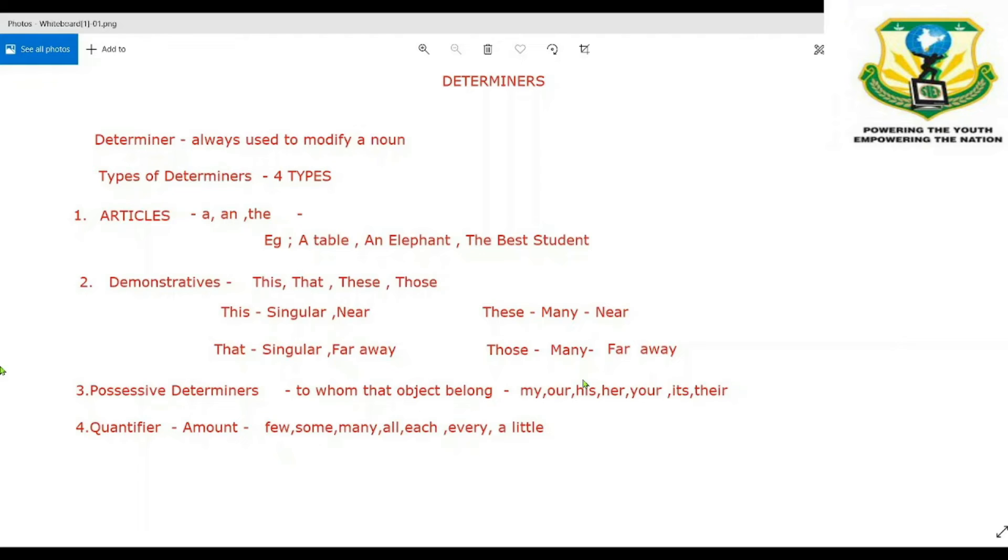All these come in as possessive determiners. And the fourth type is quantifier, which says the amount of an object, amount of a subject, amount of a noun. For example: a few, some, many, all, each, every, and a little.